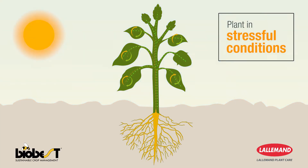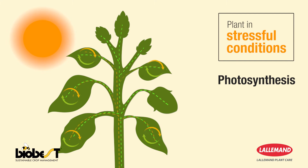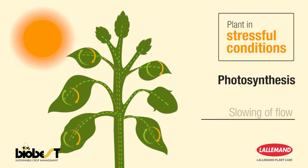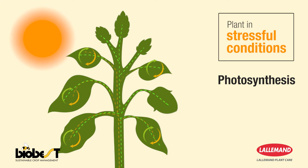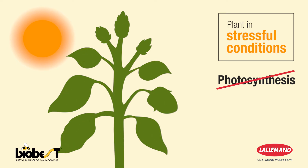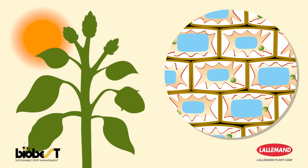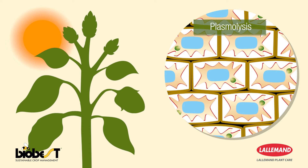In dry conditions and/or when the temperature is too high, the plant closes its stomata to limit water loss. The circulatory flow of water, minerals, and gases is slowed down, and photosynthesis is then disturbed. At the cellular level, the vacuole empties the water it contains to create balance in the extracellular medium — this is plasmolysis. The plant wilts.